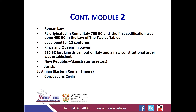The first codification of Roman law was in 450 BC — that is 450 before Christ — and it was kept in the Law of the 12 Tables. It developed for 12 centuries. During those days it was the time of emperors and kings. In 510 BC, a king was driven out of Italy and they started a new constitutional order, moving away from emperors and kings and starting with the magistrates, who were also referred to as praetors. The practice of magistrates also gave rise to the jurists.